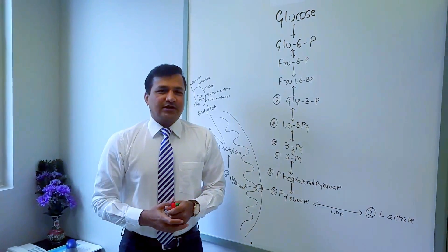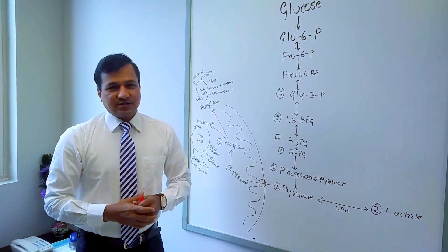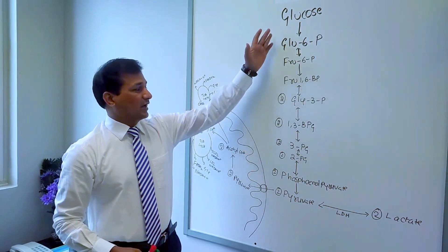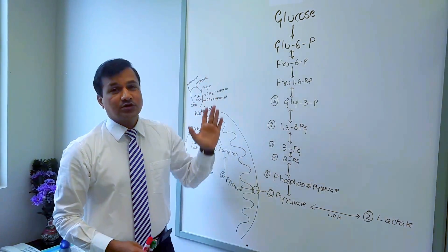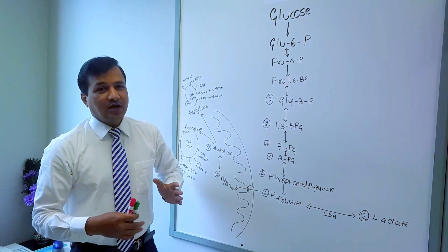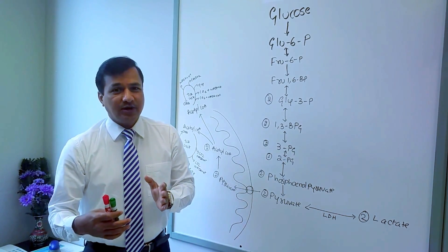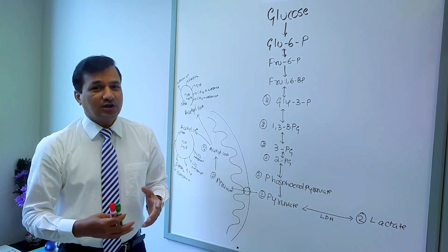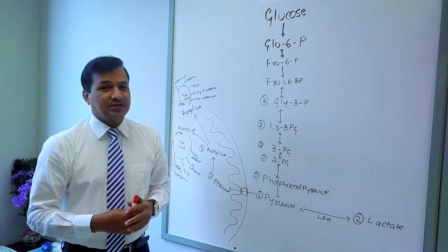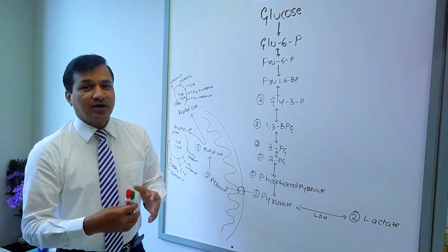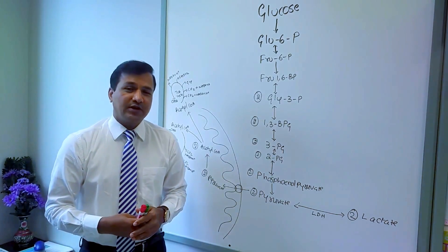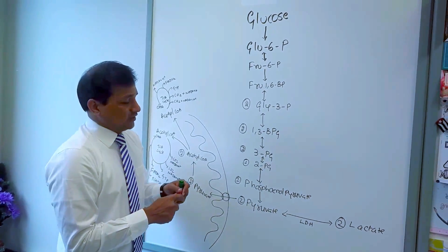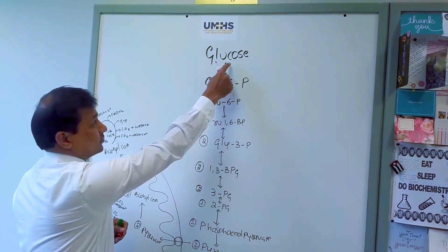Today I am going to explain the energetics of glycolysis. In this video I will be covering glycolysis proper — the conversion of glucose into pyruvate molecules — then anaerobic glycolysis and aerobic glycolysis. We will calculate the total number of ATPs you get in glycolysis, in anaerobic glycolysis, and in aerobic glycolysis.